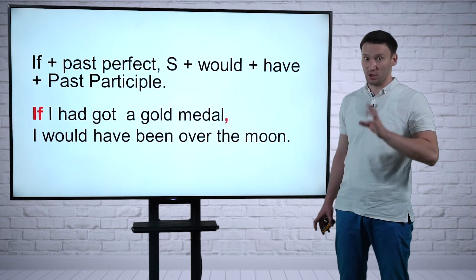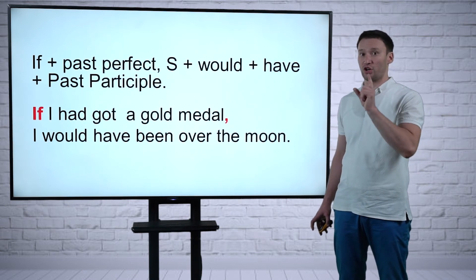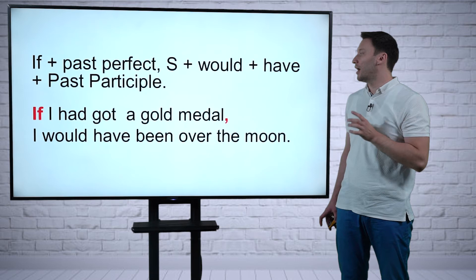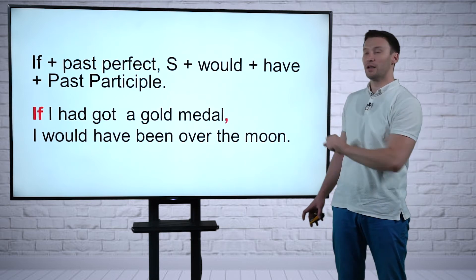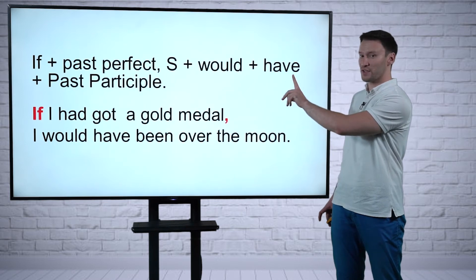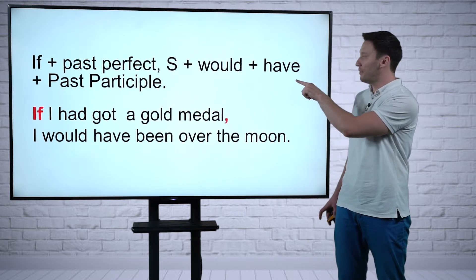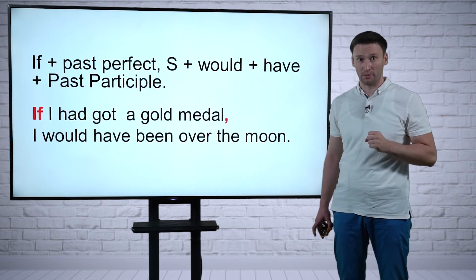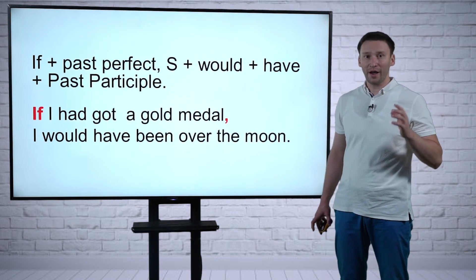We start the sentence with if: If I had got—past perfect—if I had got a gold medal, comma, I would... The difference goes here: I would then have, then past participle, which is the third form of a verb. I'm going to repeat: If I had got a gold medal, I would have been over the moon.